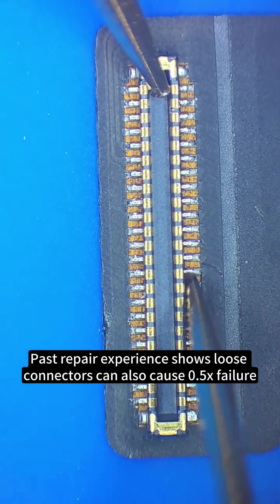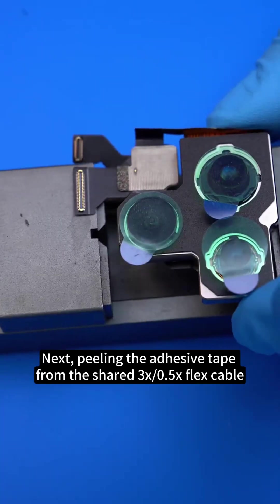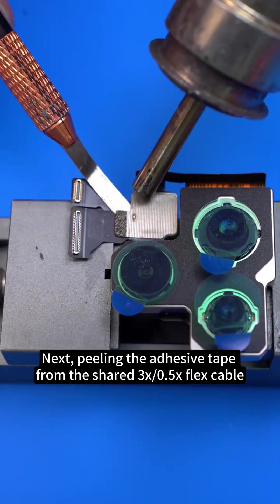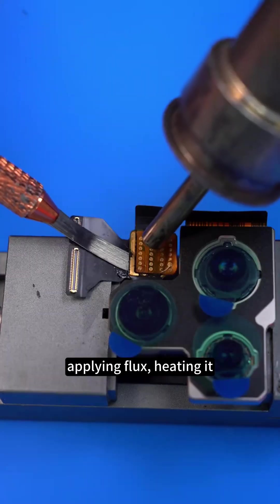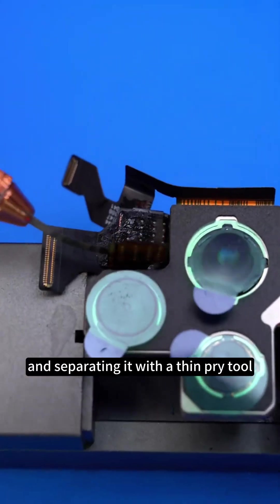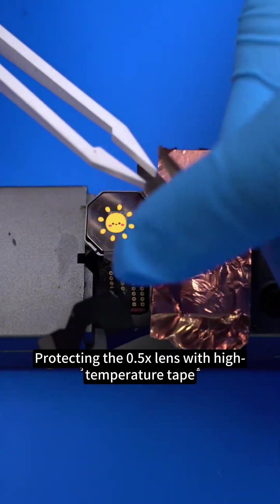We tested the connector soldering and grounding - both are normal. Next, peeling the adhesive tape from the shared 3x/0.5x flex cable, applying flux, heating it, and separating it with a thin pry tool.